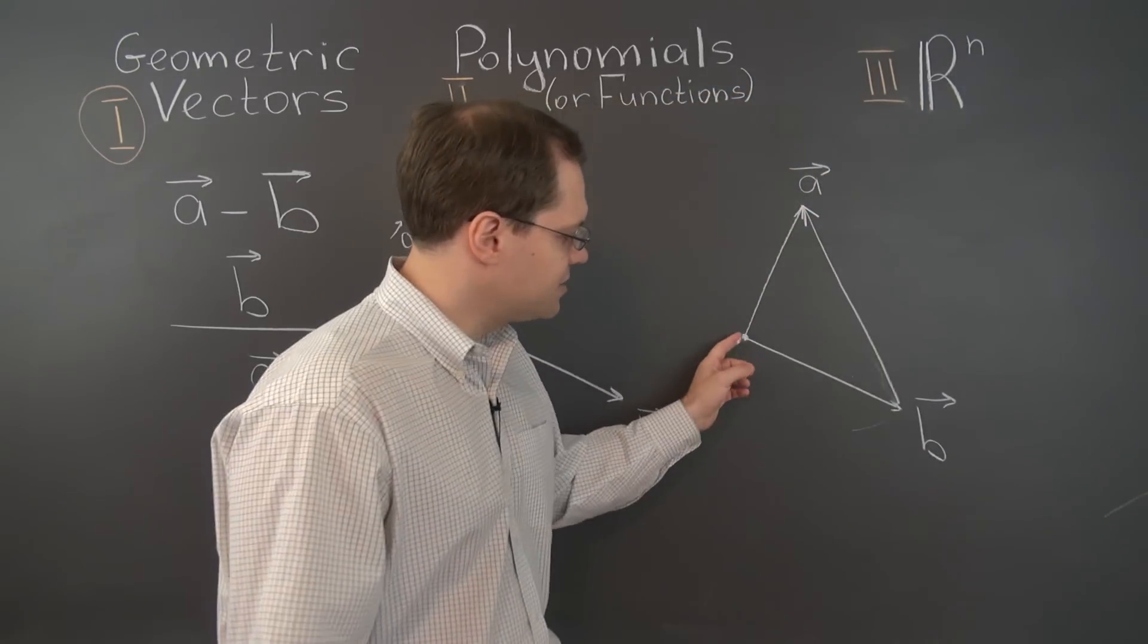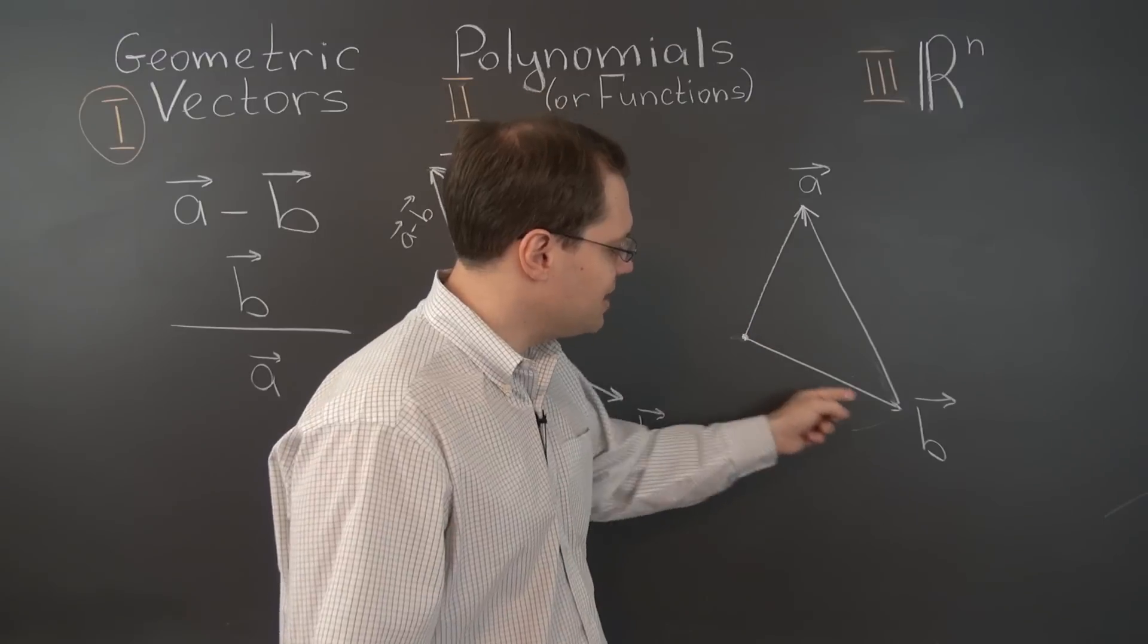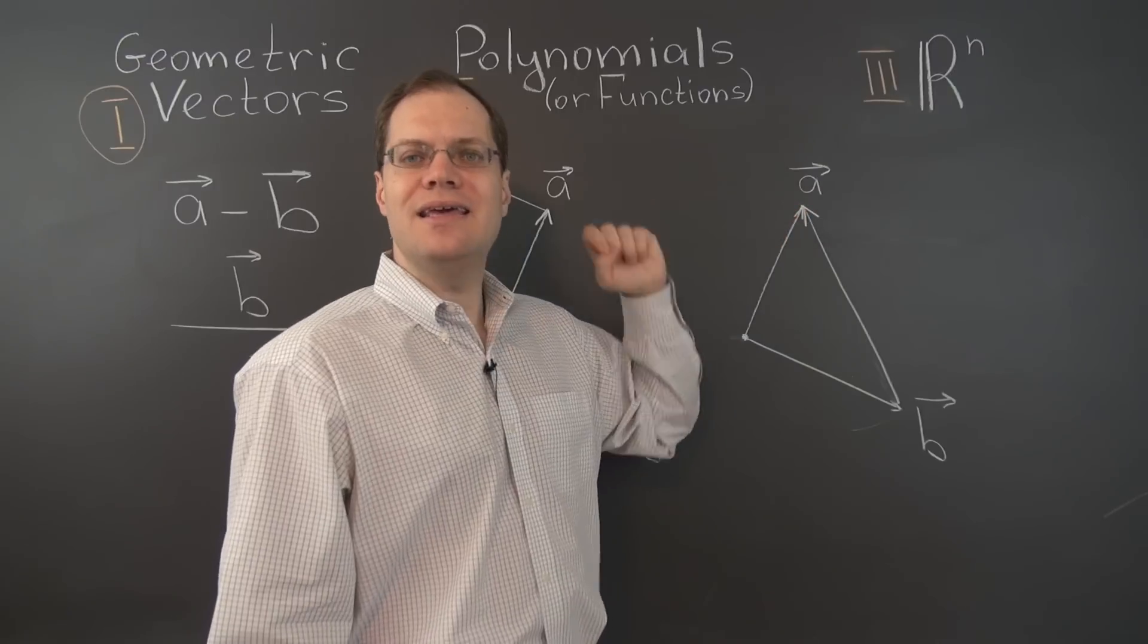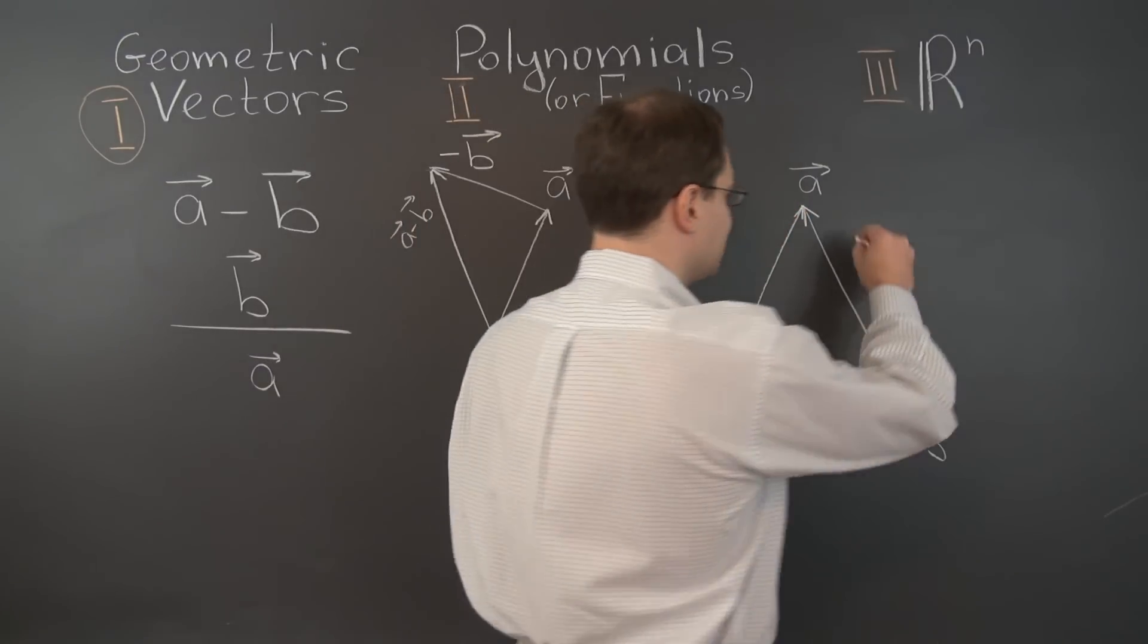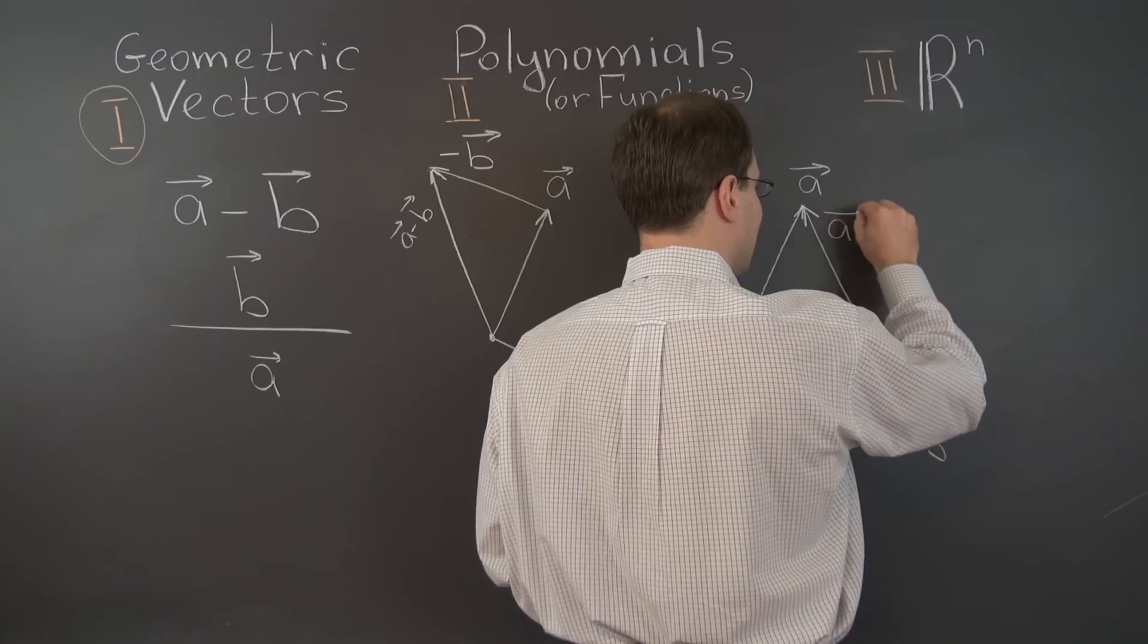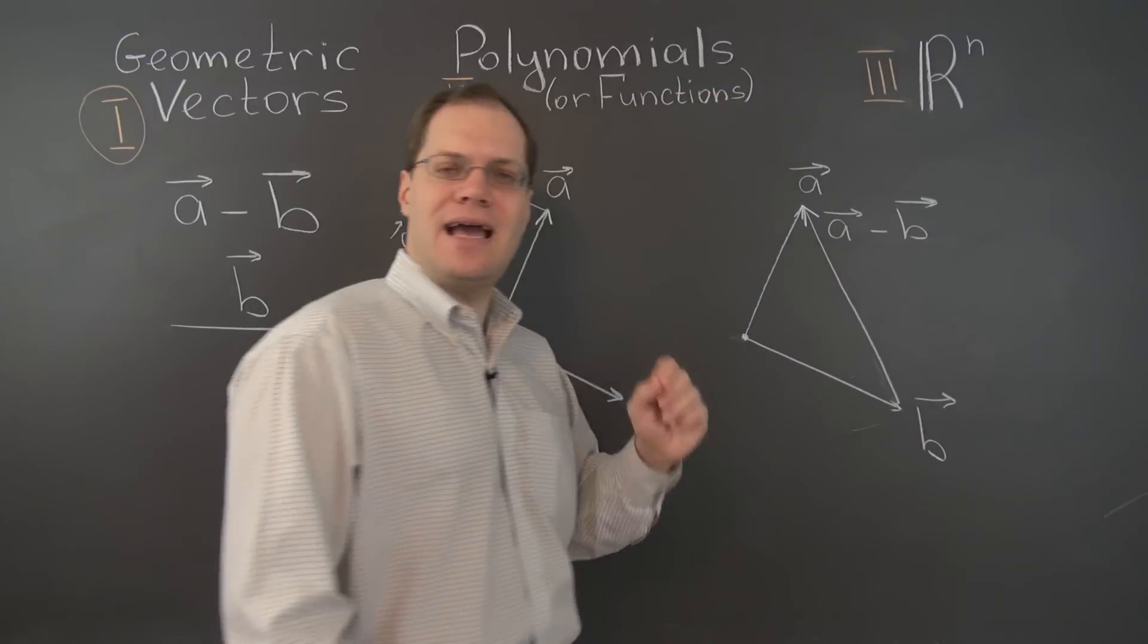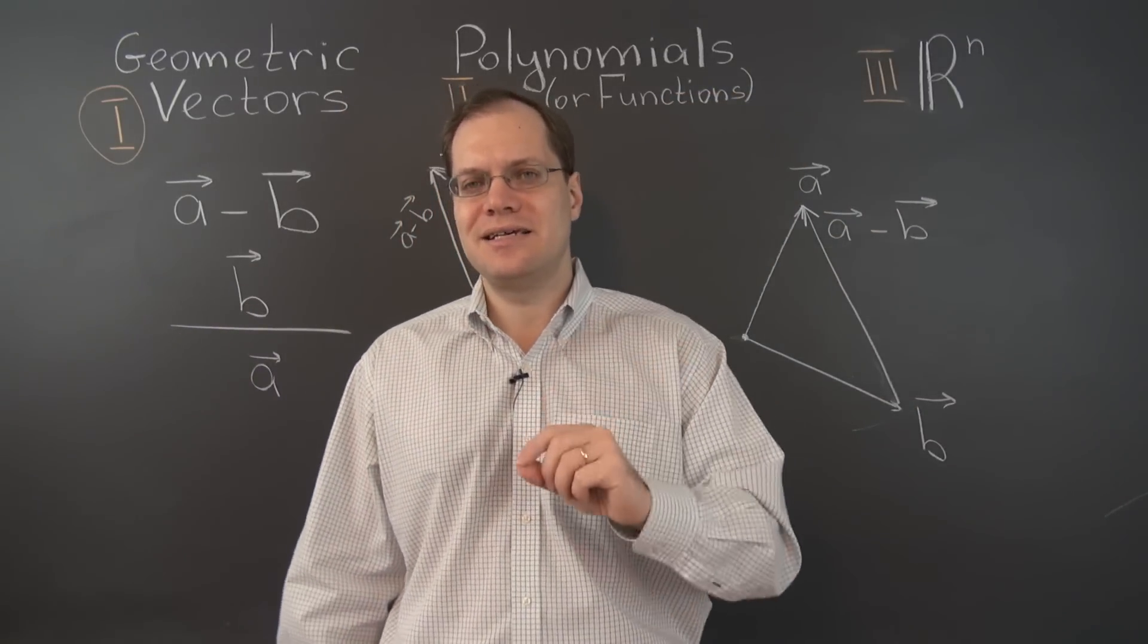Because this vector plus B, so B plus this vector equals A. So this vector right here has got to be A minus B. How nice is that? We've obtained the answer we were looking for in a single step.